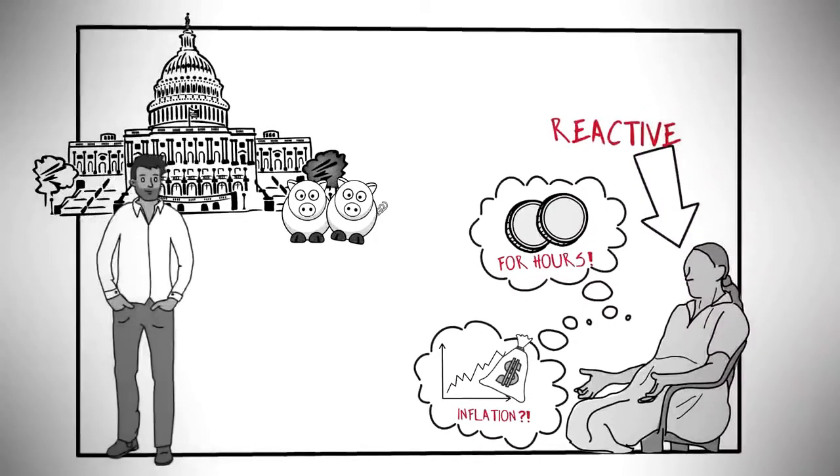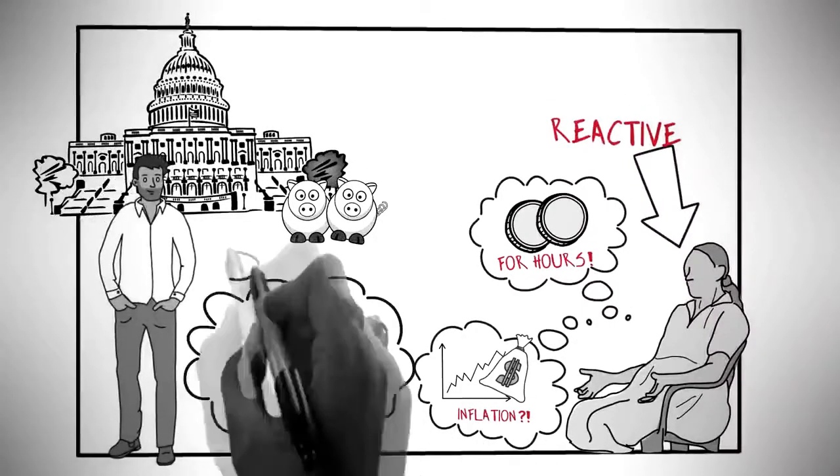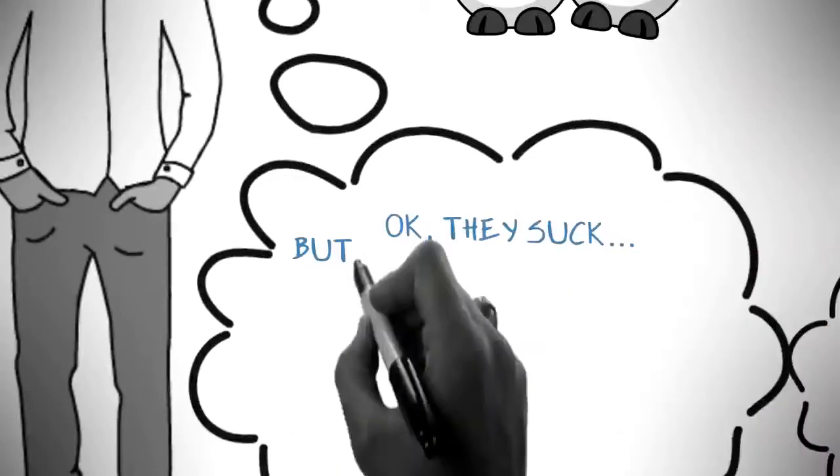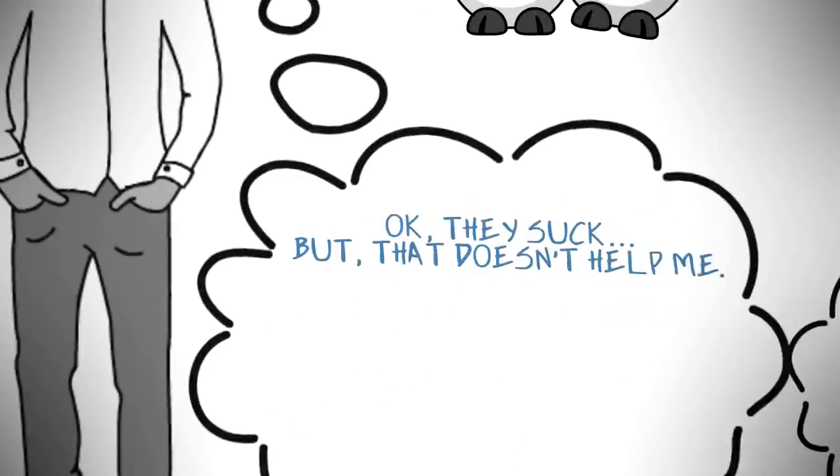On the other hand, proactive people realize, look, even if my complaining were completely objective, it doesn't help me. So I'm going to focus on what I can control.